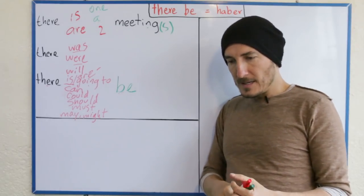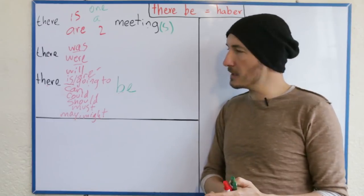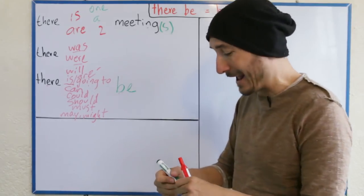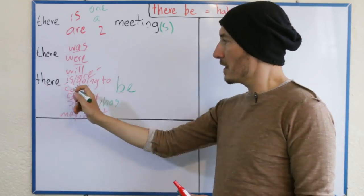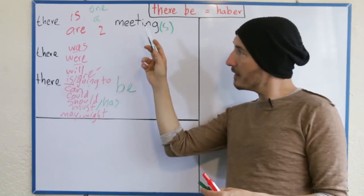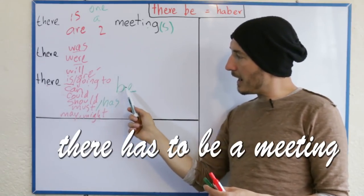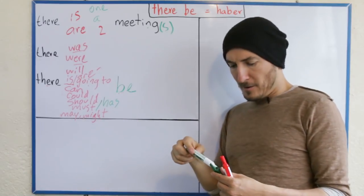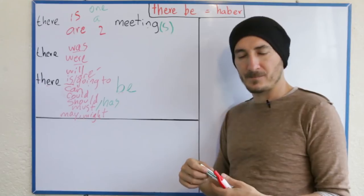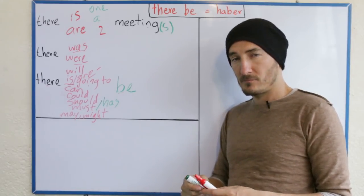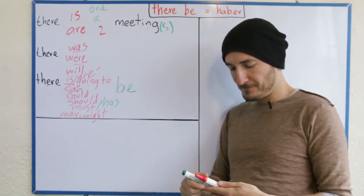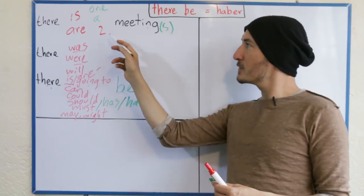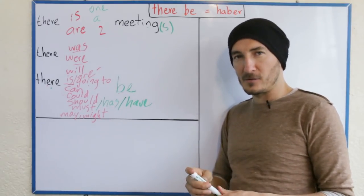¿Y cómo se diría 'tiene que haber una reunión' — como obligación? Pues 'tener' es con 'have'. There has to be a meeting. 'Tiene que haber' — recuerden que el 'haber' es con el 'be'. Tiene que haber — there has to be a meeting. Pero si son dos reuniones las que tiene que haber este mes, 'tienen que haber dos reuniones', ¿cómo lo digo? Si aquí es 'has', para el plural es 'have'. There have to be two meetings.